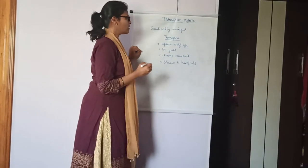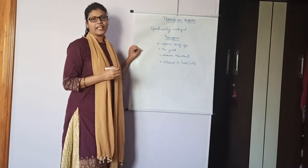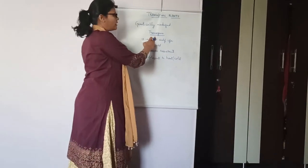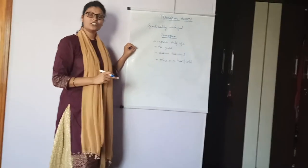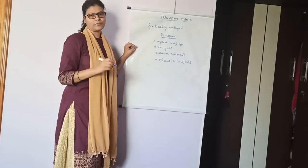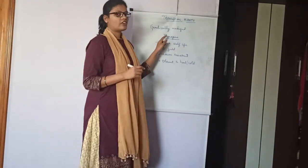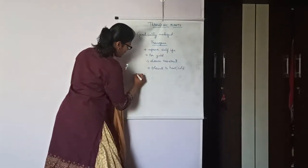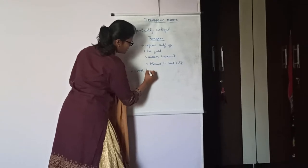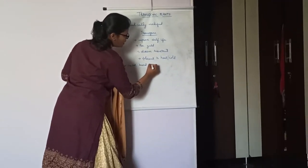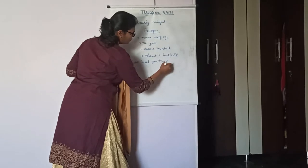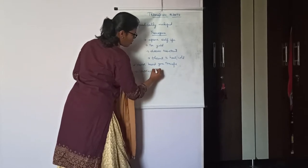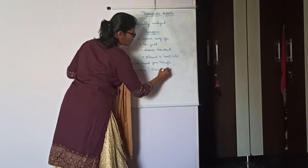The method that is used is recombinant DNA technology. By recombinant DNA technology, the transgene is inserted into the plant's genome. To create transgenic plants, two methods are employed: vector-based gene transfer, and secondly, vectorless or direct gene transfer.